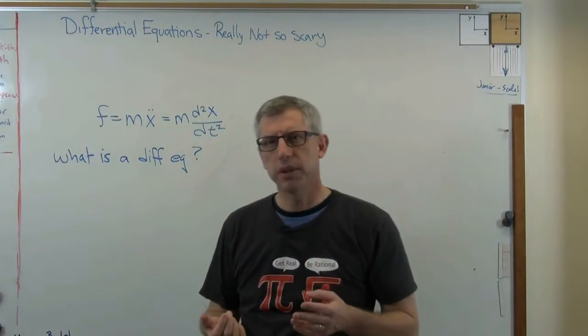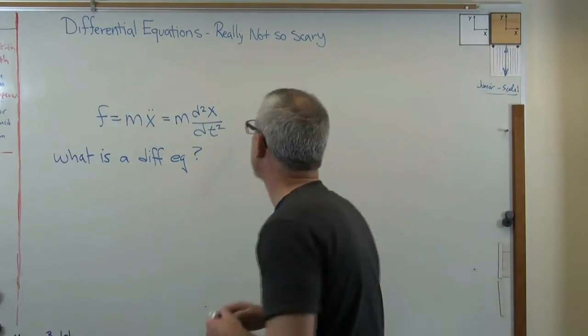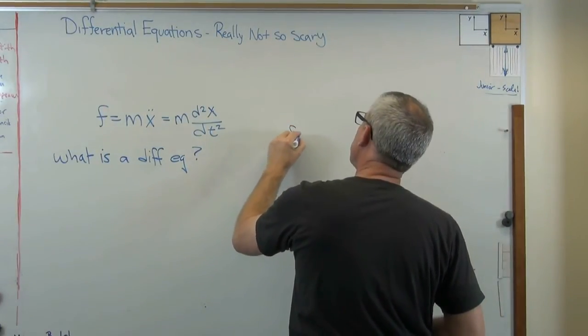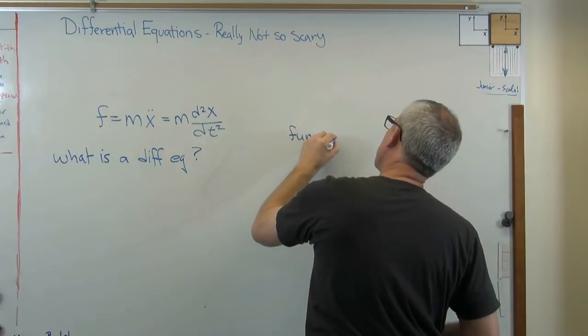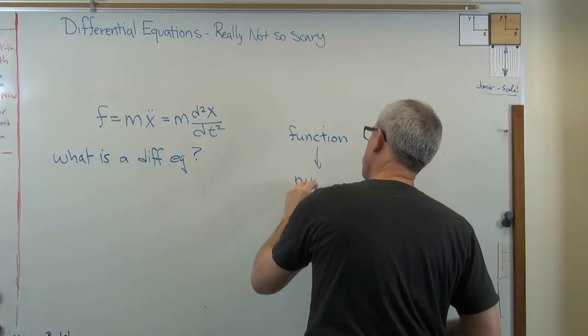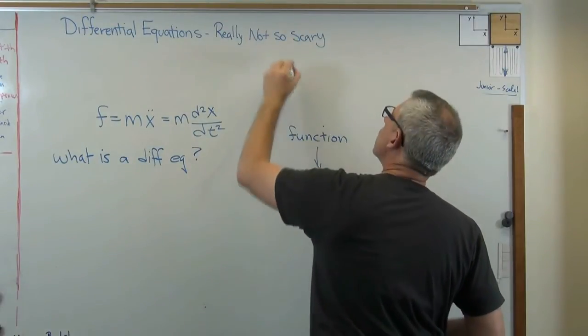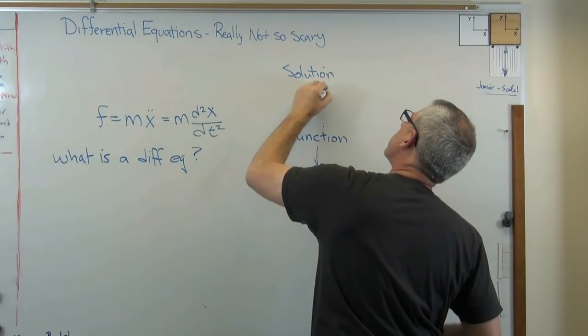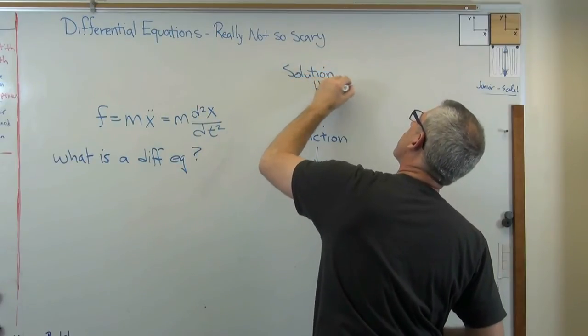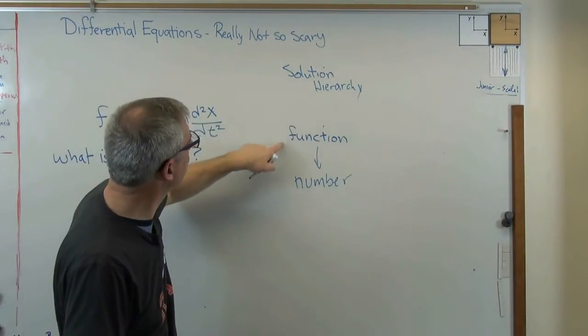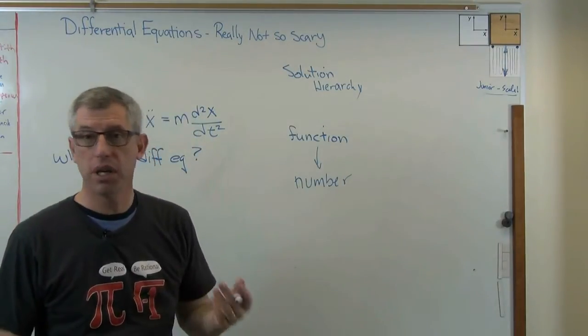So, we got that going on. What makes them so difficult to solve? Well, let me draw a little chart for you here. If you solve a function, you get a number. I'll call this a solution hierarchy. That sounds pretty academic. So, I'll call this a solution hierarchy. If you solve a function, you get a number. If I go out here and I write y plus 3 equals 5, well, that's a function. If I solve that, y must equal 2.